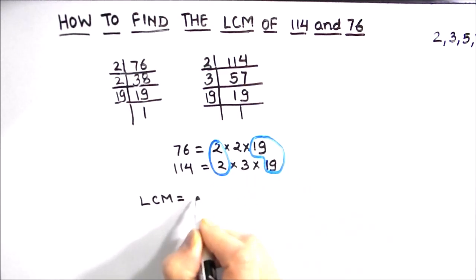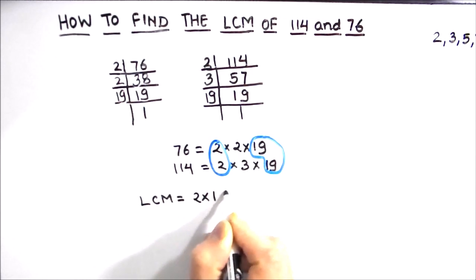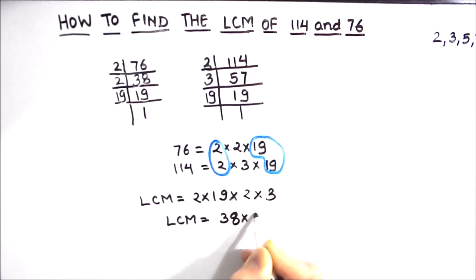So first we will write the product of the common factors which is 2 times 19 and then multiply it with the uncommon factors. So the rest of the factors are 2 and 3, so 2 times 3. So LCM will be equal to 19 times 2 is 38 times 2 times 3 is 6 which is equal to 228. So the LCM of the two numbers is 228.